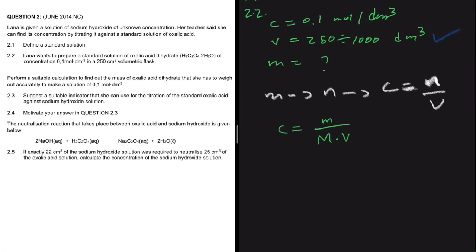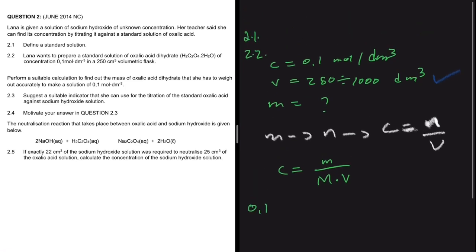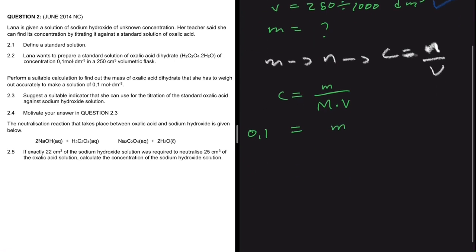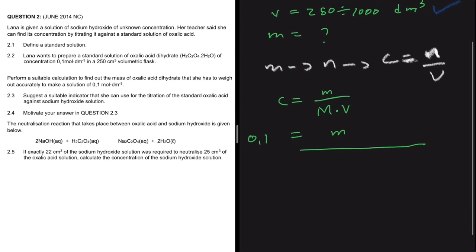Our concentration is 0.1, which equals the mass — what we're solving for — divided by the molar mass of our chemical compound, multiplied by the volume.